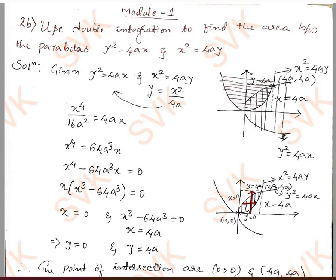Therefore, the points of intersection are (0, 0) and (4a, 4a). Now sketching the graph: the curve y² = 4ax is symmetric about the x-axis, and the curve x² = 4ay is symmetric about the y-axis.